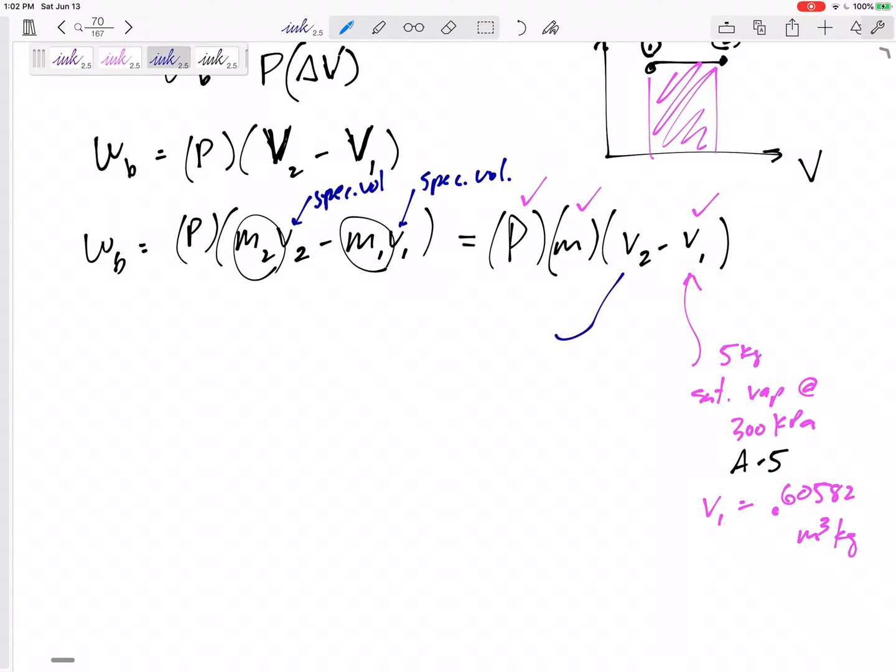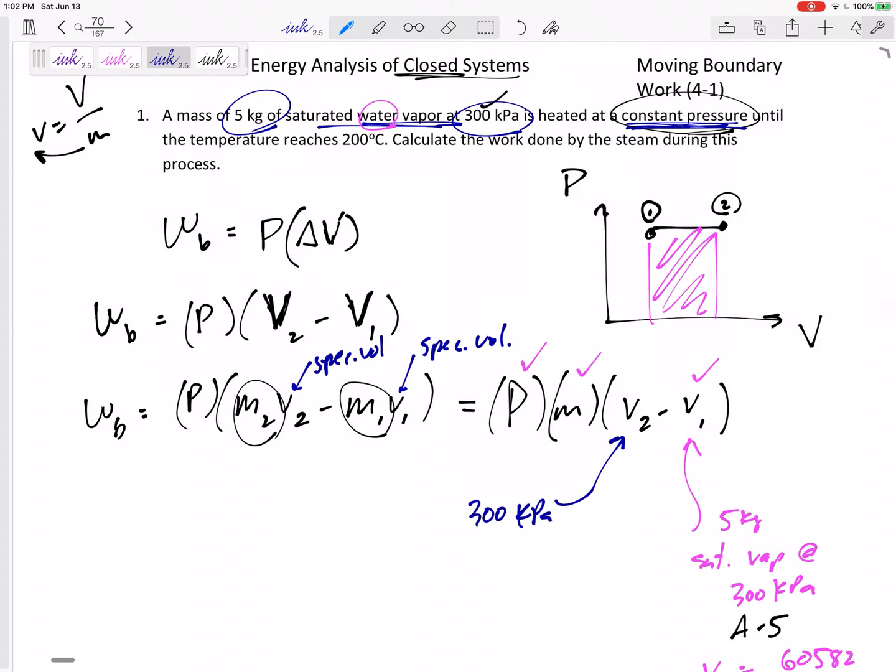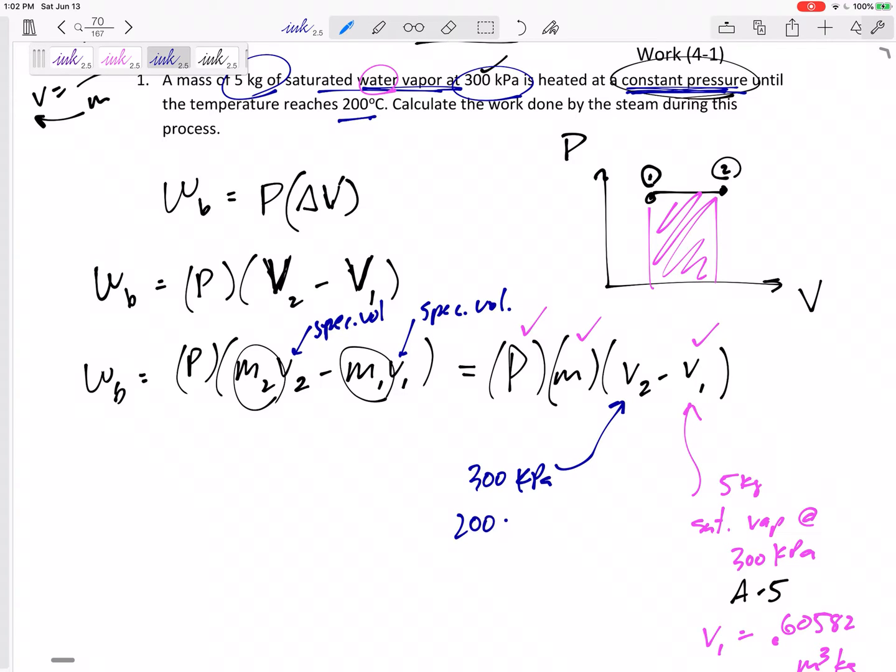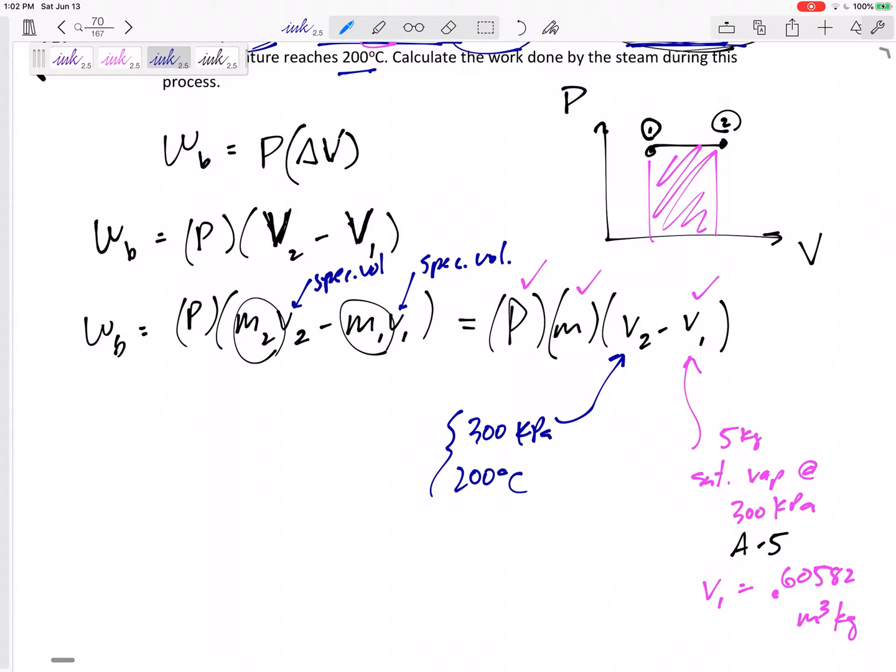What about state 2? At state 2, constant pressure, so it's still at 300 kPa, but it's being heated. The temperature reaches 200°C. That's two pieces of information, I can find everything else. My first instinct is, is it saturated, a mixture, superheated, or subcooled?